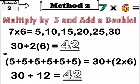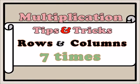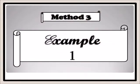Method two, example two: seven times six. You count in fives: five, ten, fifteen, twenty, twenty-five, thirty — six fives give you thirty. Then you add the double of six: six plus six is twelve. So thirty plus twelve equals forty-two. Seven times six equals forty-two.